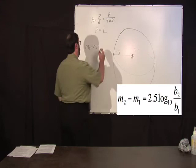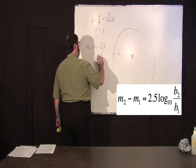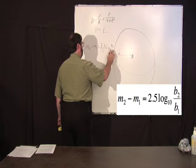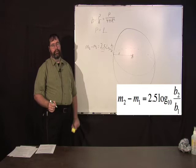is equal to 2.5, this is Pogson's ratio approximately, times the log base 10 of B2 over B1. So essentially one magnitude is roughly a quarter of a dB.